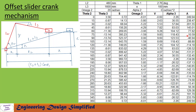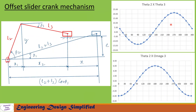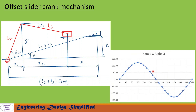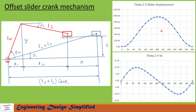In this column alpha3 is calculated, and in this column acceleration of the slider is calculated. Now let us see the graphs. In this graph we have plotted theta2 versus theta3, showing the variation of theta3 with respect to theta2. In this graph we have plotted theta2 versus omega3, showing the variation of omega3 with respect to theta2. In this graph we have plotted theta2 versus alpha3, showing the variation of alpha3 with respect to theta2.